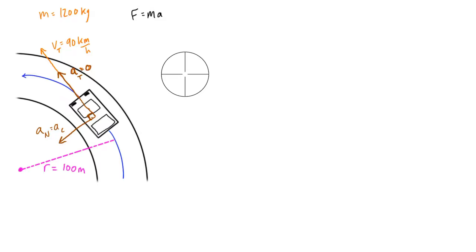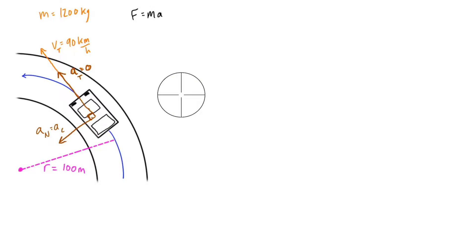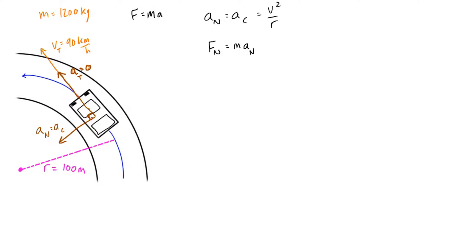Often in circular motion problems you're not usually asked to talk too much about the nature of the force — more just to calculate the inward acceleration or the magnitude of the force itself. So let's go ahead and solve some things. If we know we have a tangential velocity of 90 km/h and a radius of 100 meters, we can calculate the normal acceleration using the formula: a_n = v² / r. For the normal force, it's just F = ma, using the normal acceleration, so F_n = mv² / r.